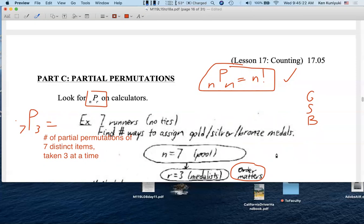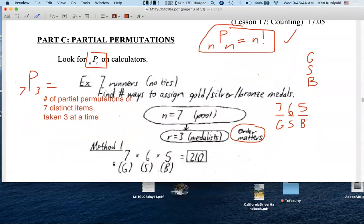Well, how many possibilities are there for the gold medalist? Seven. How many possibilities are there then for the silver medalist? Then we have six possibilities. Once these two have been established, how many possibilities for the bronze medalist? Five. So seven times six times five. This is really based on the old counting rule. And that's 210.